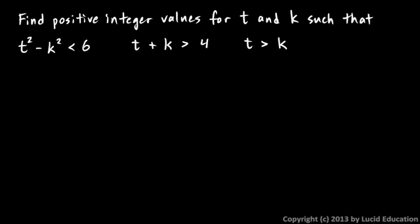So find the numbers, basically. Find a number for t and a number for k such that these three equations are all satisfied at the same time. And they have to be positive integers.